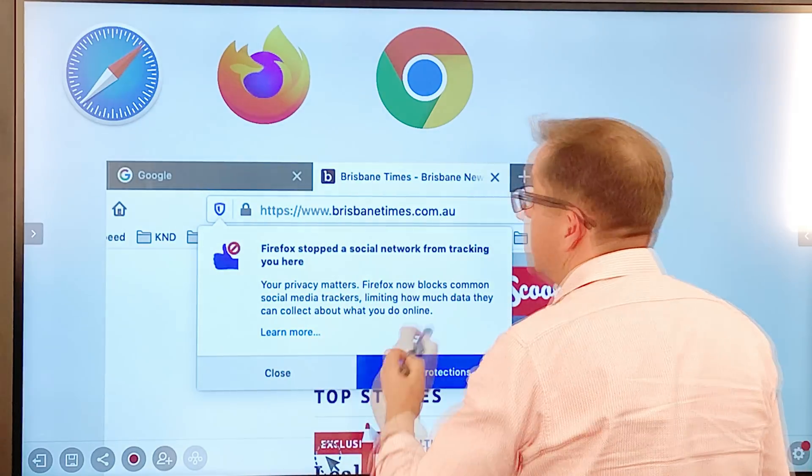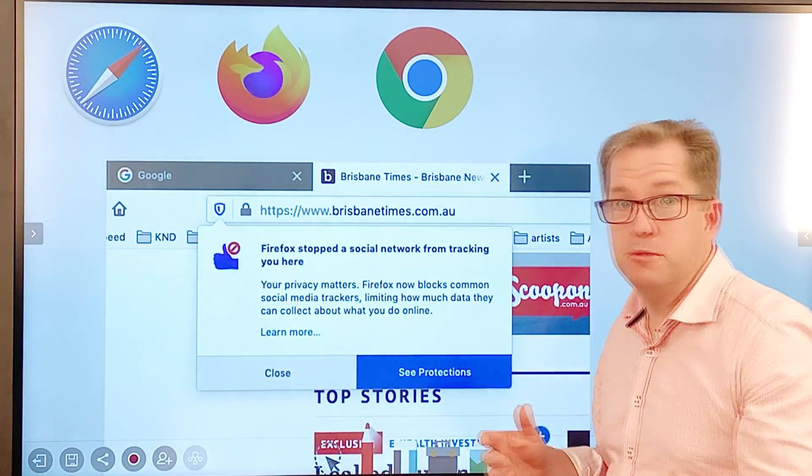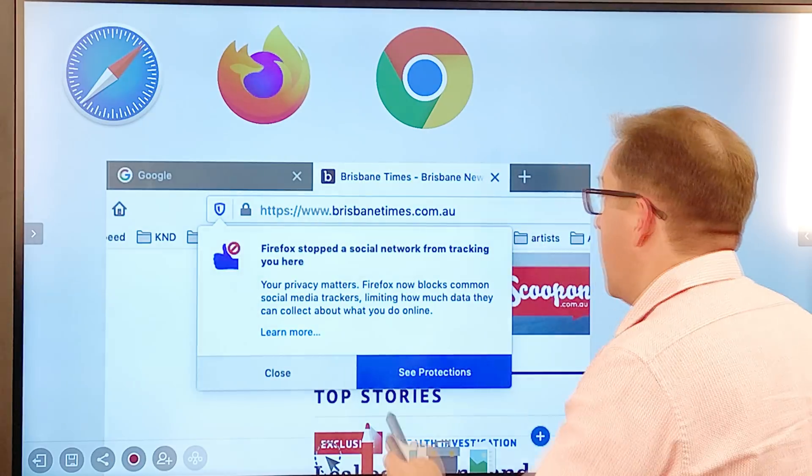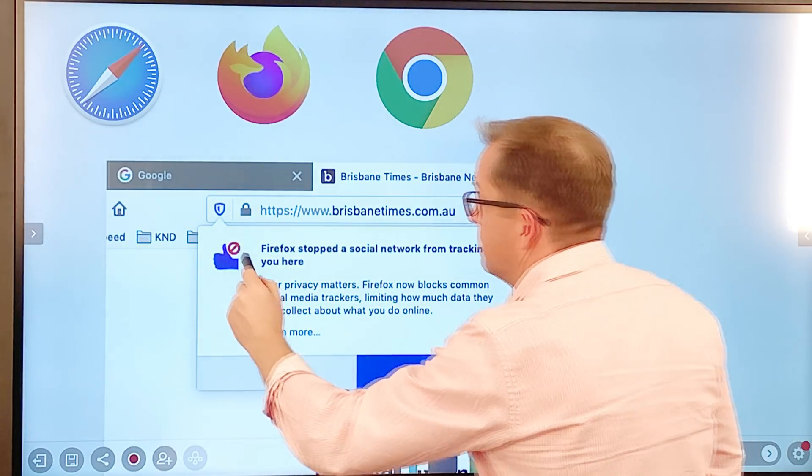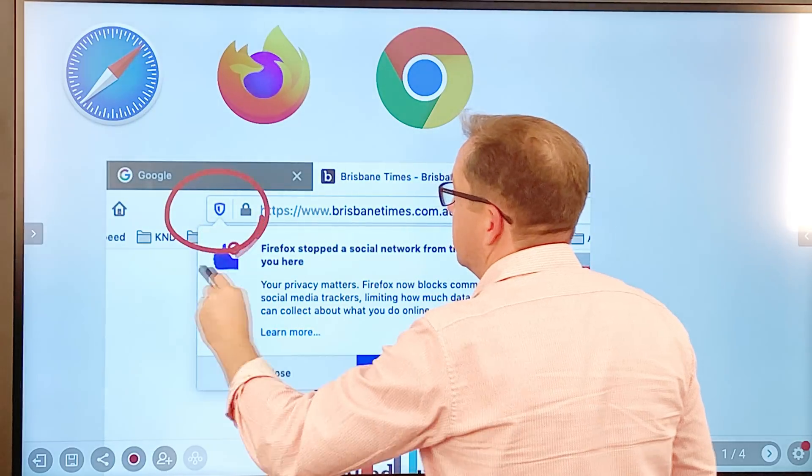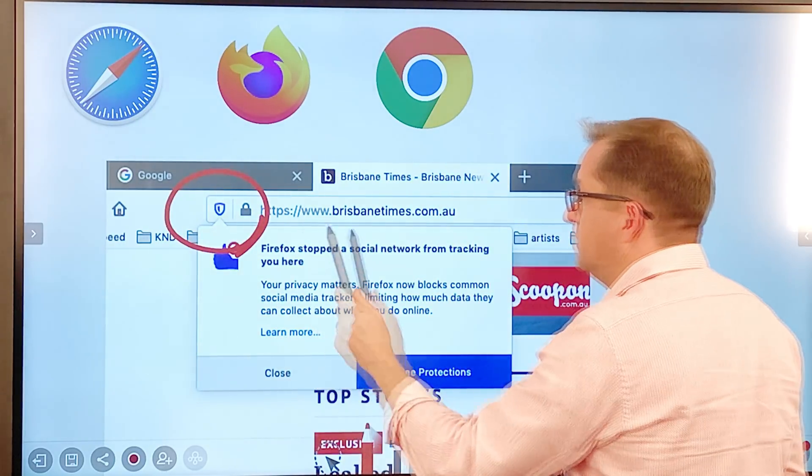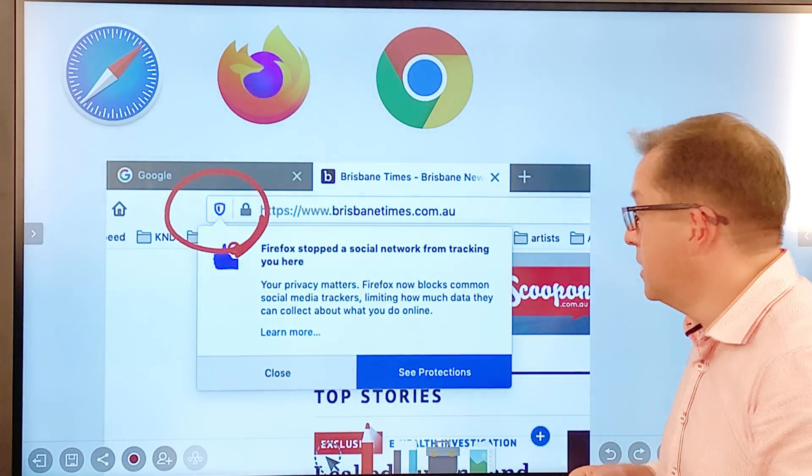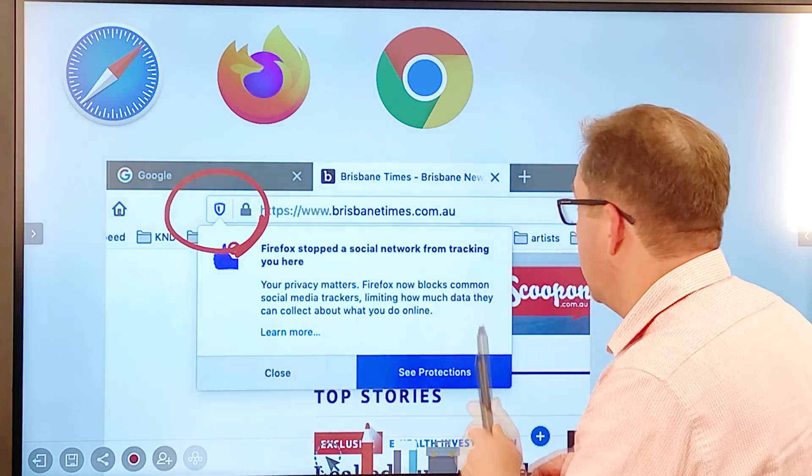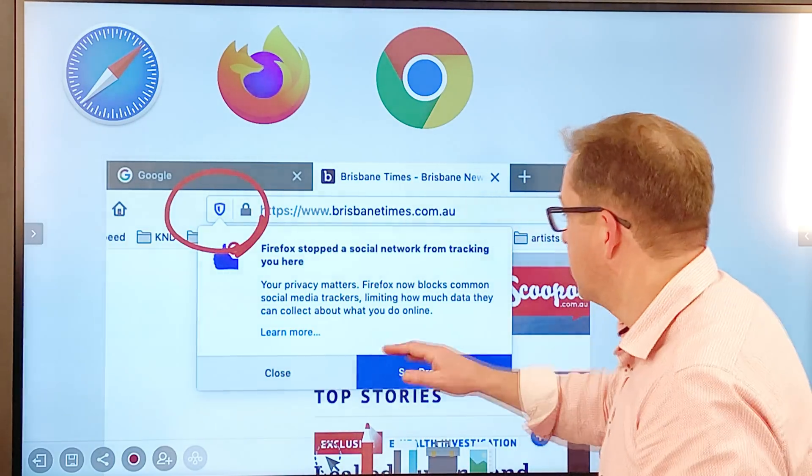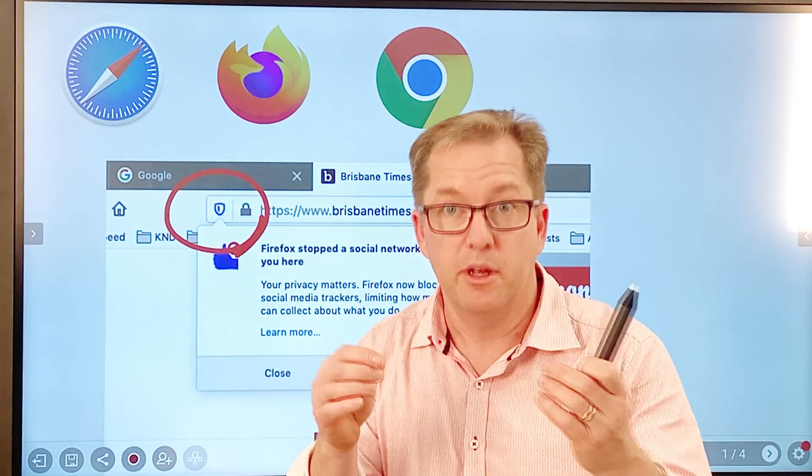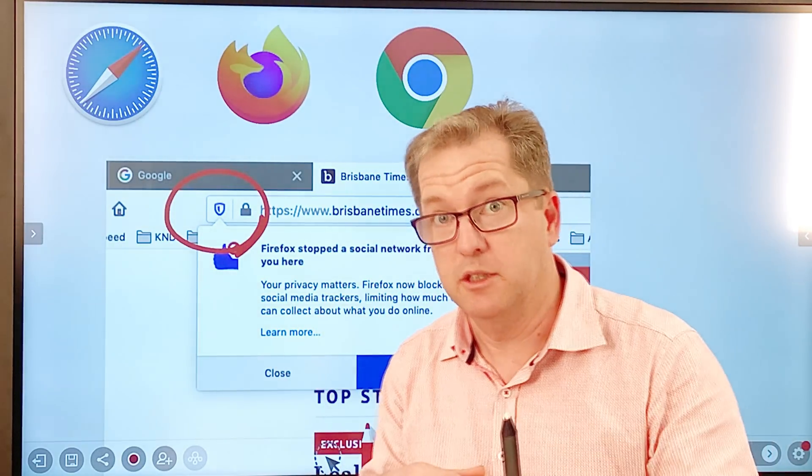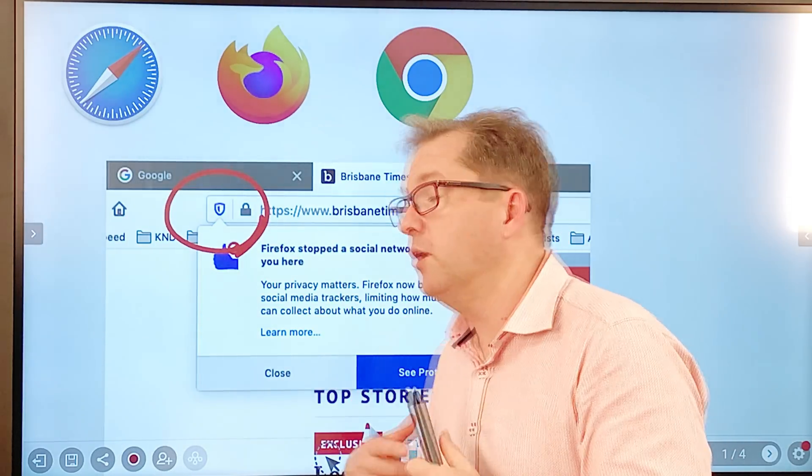So you might see, here's an example. I've been to the brisbantimes.com.au website after I've been to Facebook, and this message comes up on my browser window by default with the shield that says Firefox has stopped a social network from tracking me. So when I click through to find out to see protections, I can actually see that Facebook has tried to track my behavior through this site.